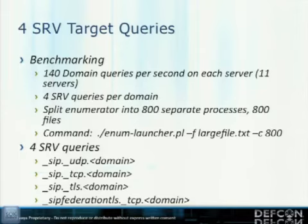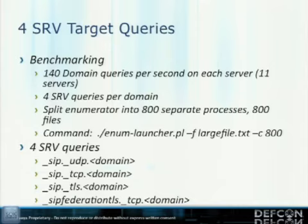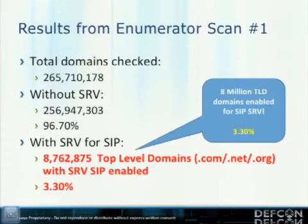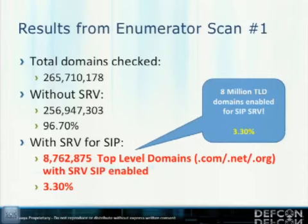We split the workload across 11 different servers. We benchmarked enumerator split into 800 separate processes, parsing a single large log file into 800 chunks. Each of the 800 enumerator processes did its workload in parallel. We benchmarked at 140 domain queries per second — the fastest we could get — with four SRV queries per domain. Those four query types are the most standard ways to host an SRV record; the last one is Microsoft-specific for federation. Results: 3.30% of domains on the public internet — .com, .net, and .org — support SRV, totaling 8.7 million domains.